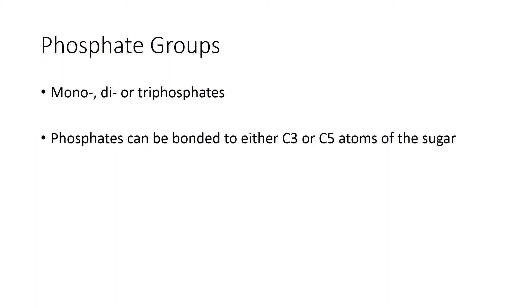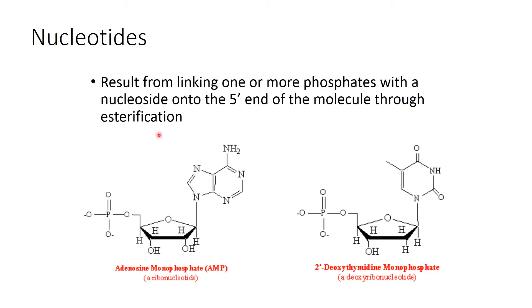This is a nucleotide — when nucleosides are combined with the phosphate. When adenosine is combined with one phosphate, it is known as adenosine monophosphate (AMP), and it is also known as a ribonucleotide. On the other hand, deoxythymidine monophosphate, where thymidine is attached to one molecule of phosphate, is known as a deoxyribonucleotide.